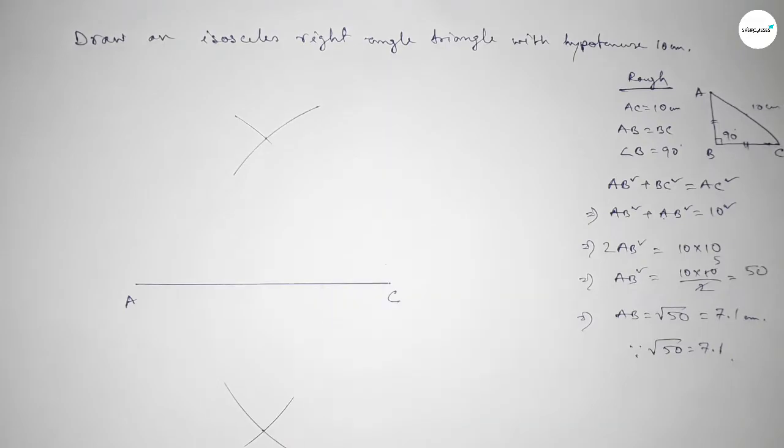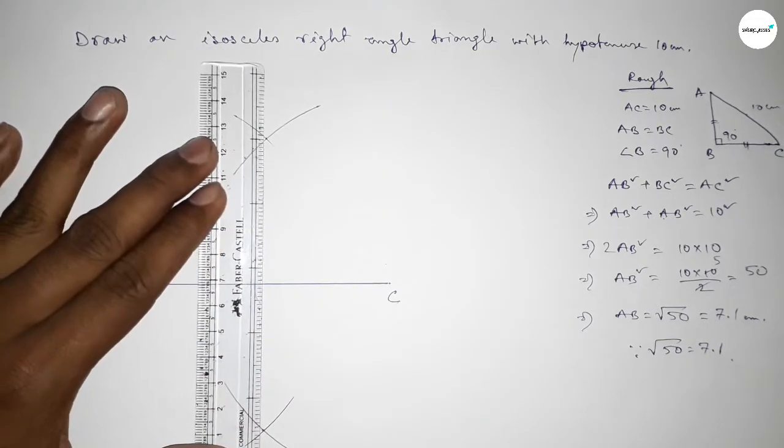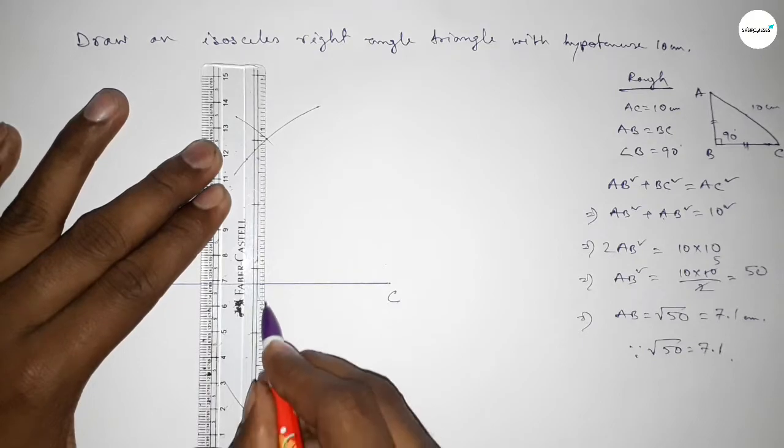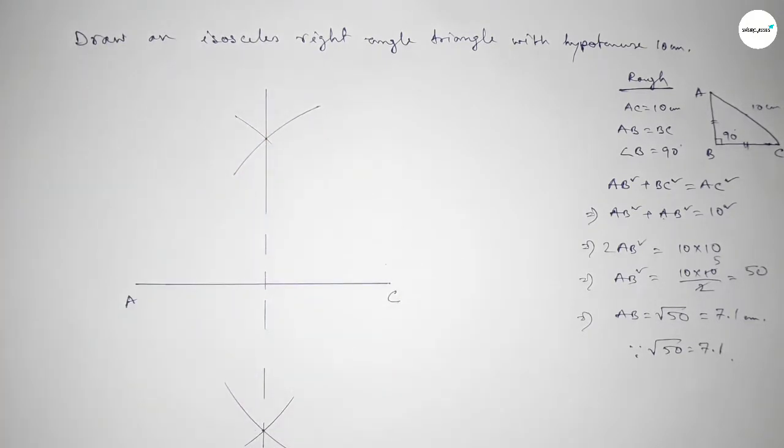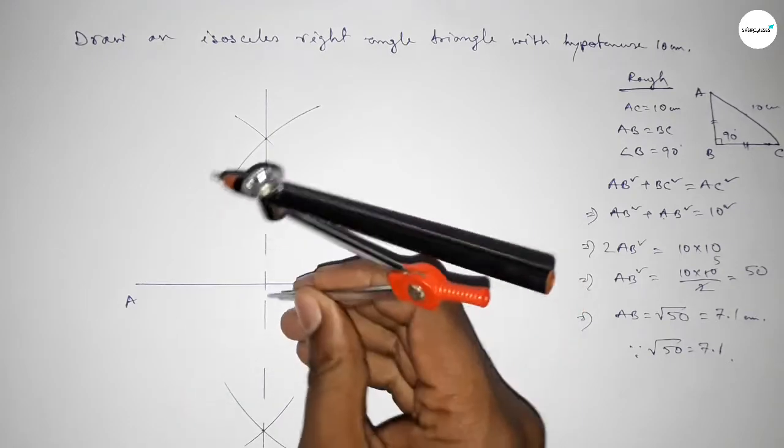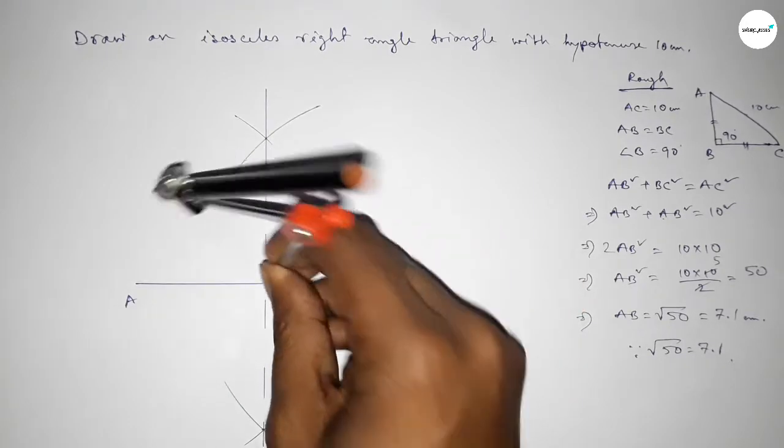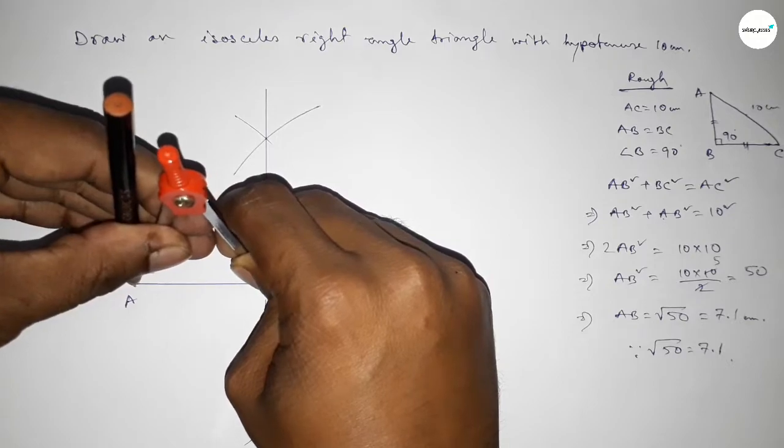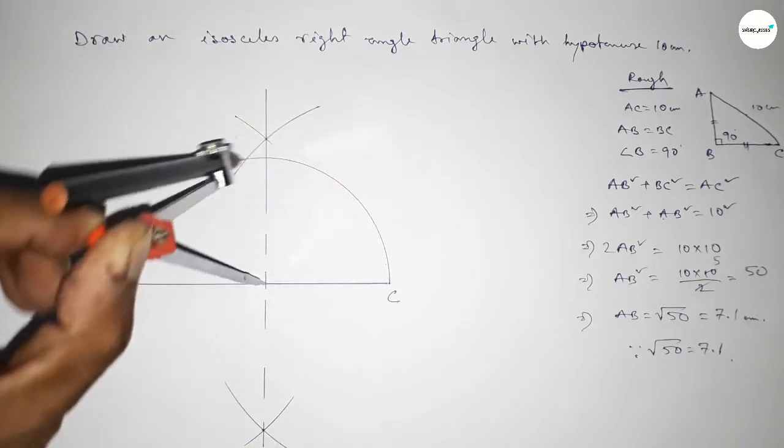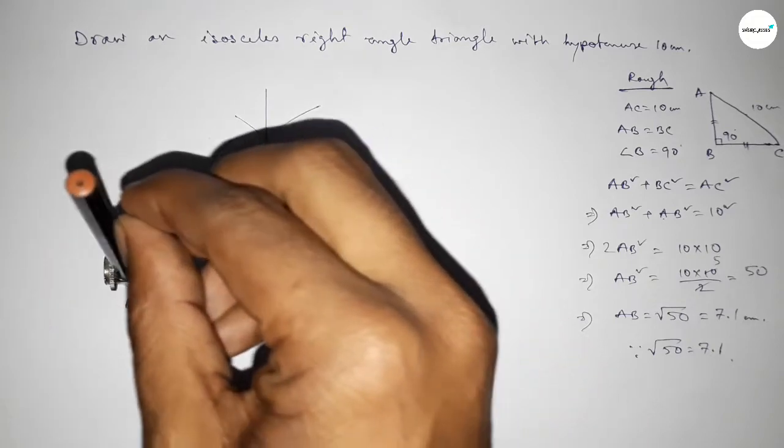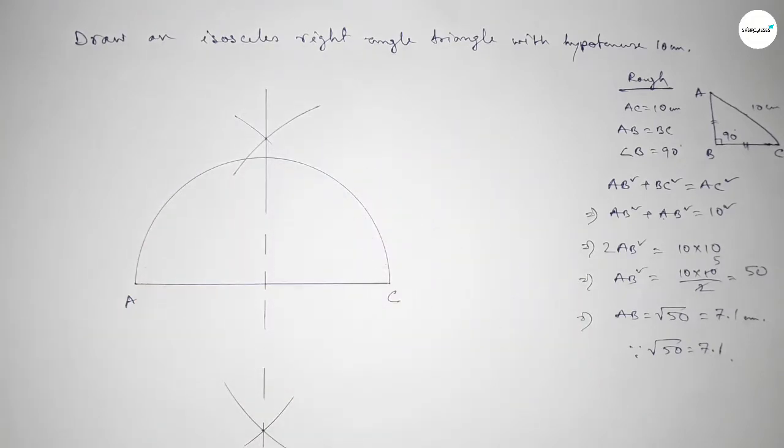Now joining this bisector. So first joining this bisector, next taking the length, so putting the compass here and taking length from this to A point and this point to C point. Now drawing here a semicircle.